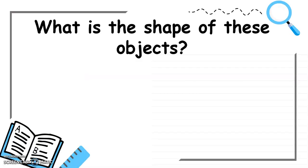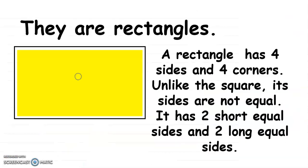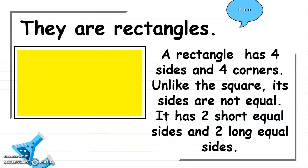What about, what is the shape of these objects? Good job! They are rectangles. A rectangle has 4 sides and 4 corners. Unlike the square, its sides are not equal. It has 2 short equal sides and 2 long equal sides.